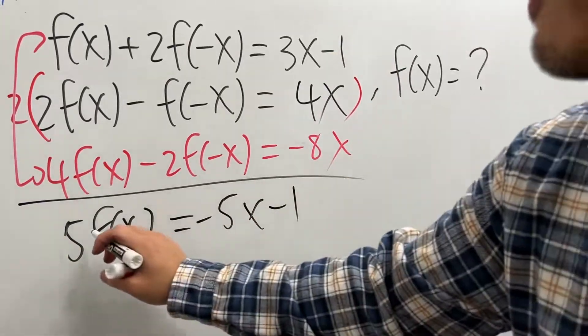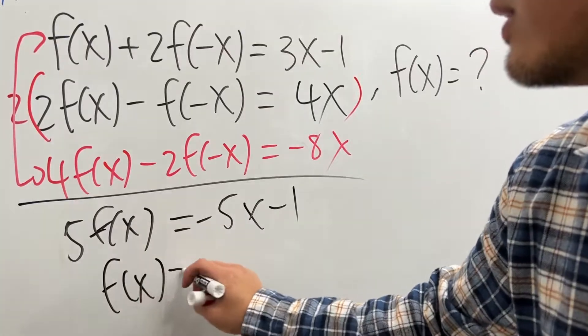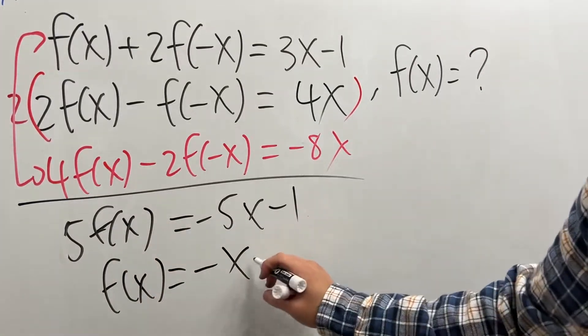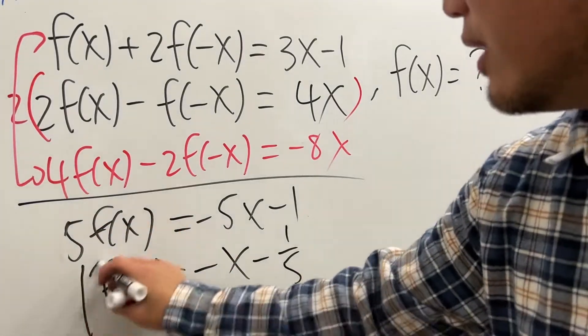So divide everybody by 5. We get f(x) equals this divided by 5. We get -x, and this divided by 5 we get -1/5. So this right here is the answer.